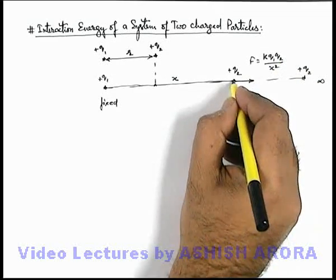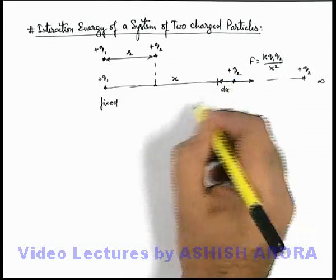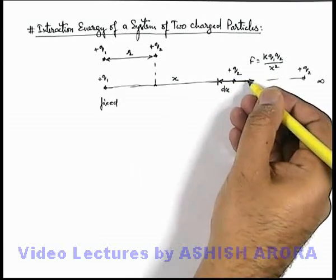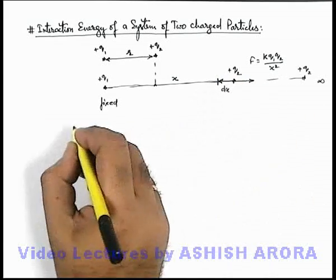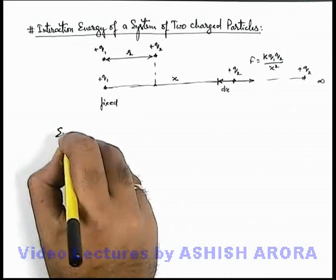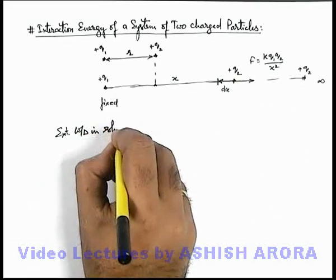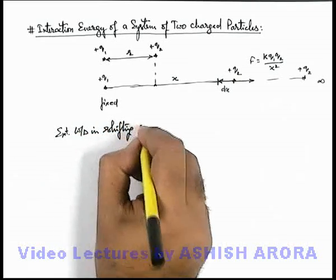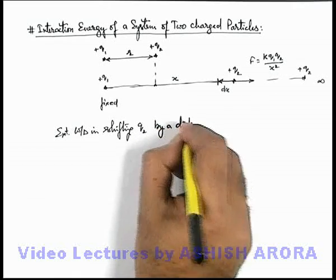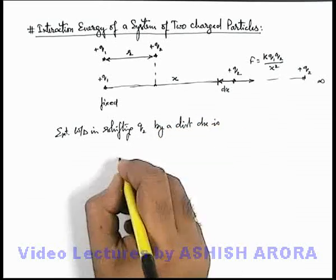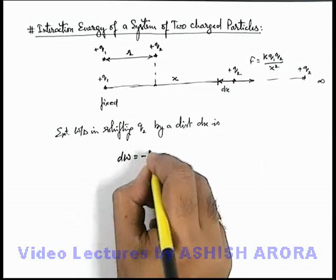Now in this situation, if this q2 is brought closer by a distance dx, then we need to apply the same force in opposite direction to bring it. In this situation, the external work done in shifting q2 by a distance dx can be written as dW, and this will be minus F dx.